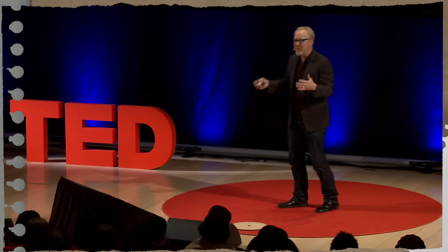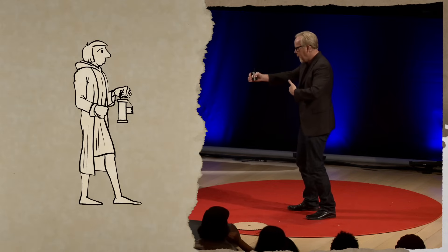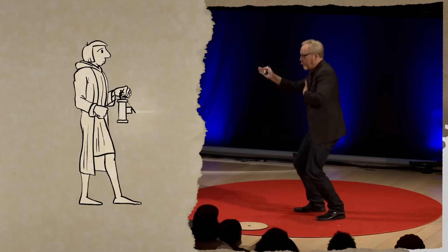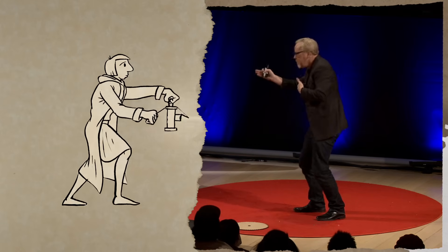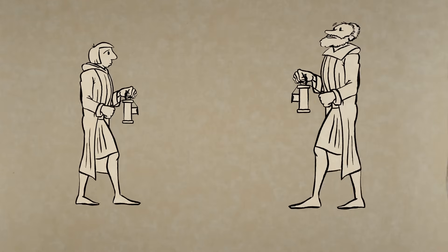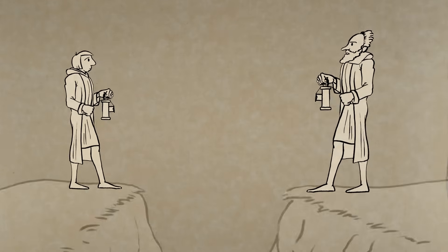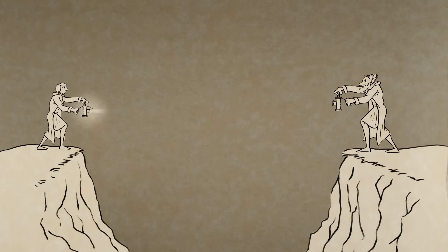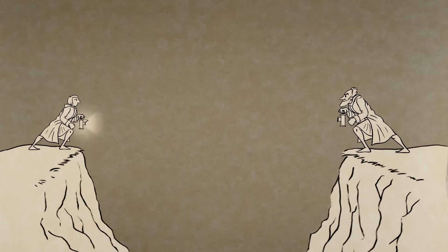So Galileo had worked out this really wonderful experiment where he and his assistant had a lamp, each one was holding a lamp, and Galileo would open his lamp and his assistant would open his lamp. And they got the timing down really good. They just knew their timing. And then they stood at two hilltops two miles distant, and they did the same thing on the assumption from Galileo that if light had a discernible speed, he'd notice a delay in the light coming back from his assistant's lamp.